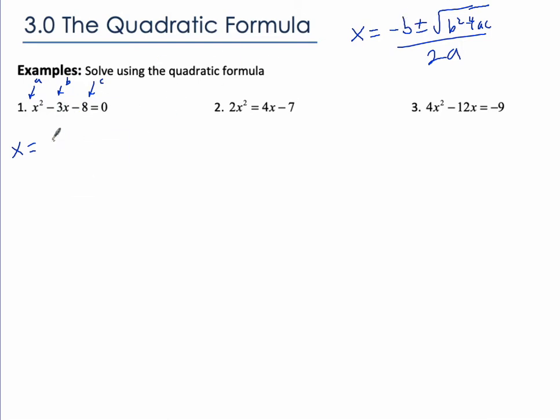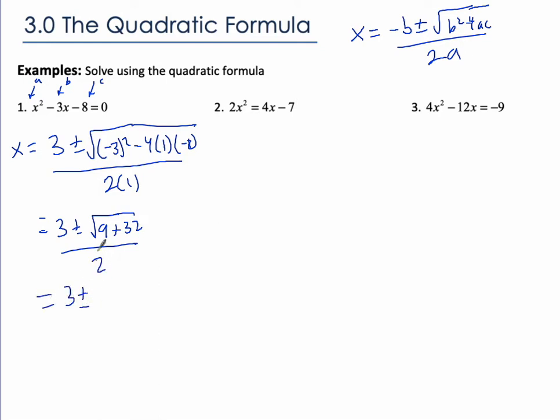So you're going to have negative negative 3, so 3 plus or minus the square root of negative 3 squared minus 4ac over 2 times a, which is just 1, and then we can simplify. 3 plus or minus root 9 plus 32 over 2, and that is root 41 over 2. Sometimes we can simplify the root. In this case, we can't.